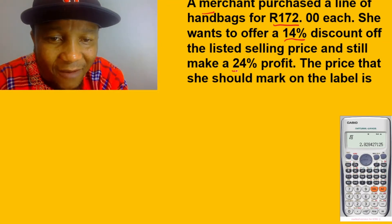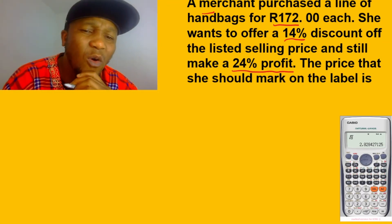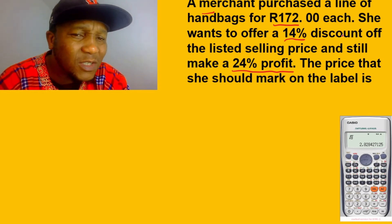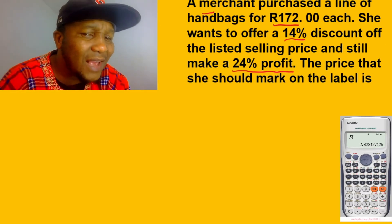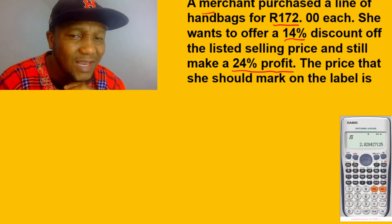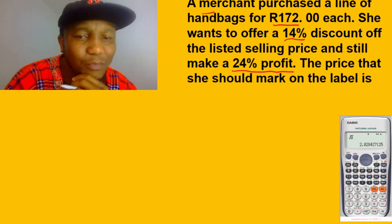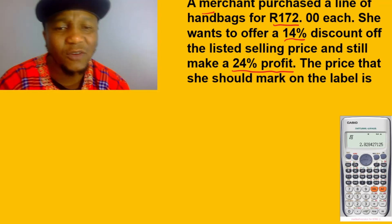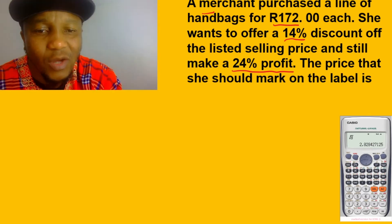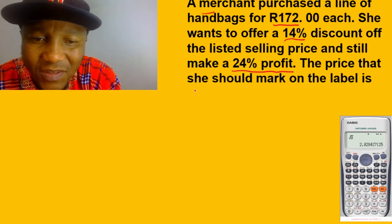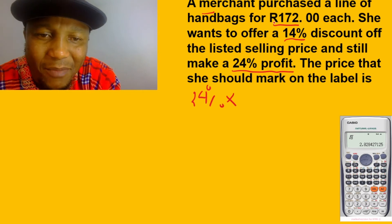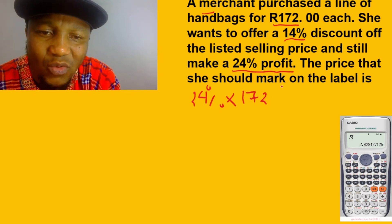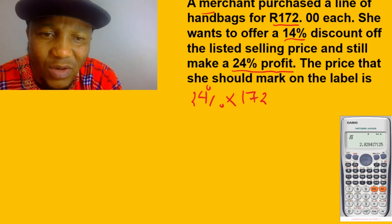They say she still wants to make a profit of 24%. So let's find the selling price such that she still makes 24% profit. Let me find the 24% profit — it's easy. I'm going to take 24% and multiply it by the price she bought, which is 172.